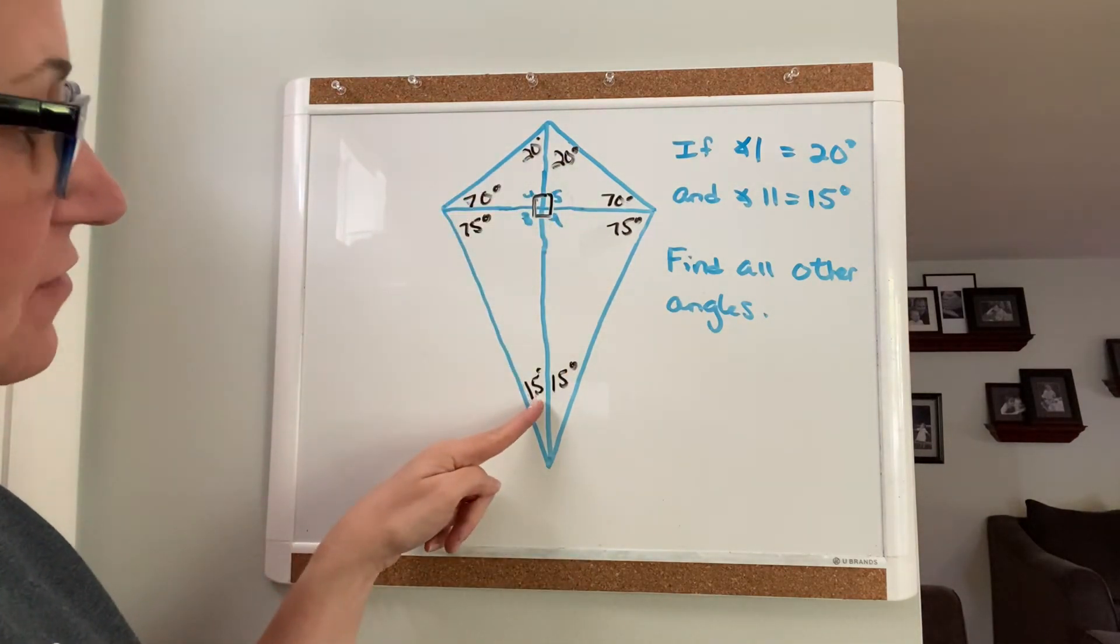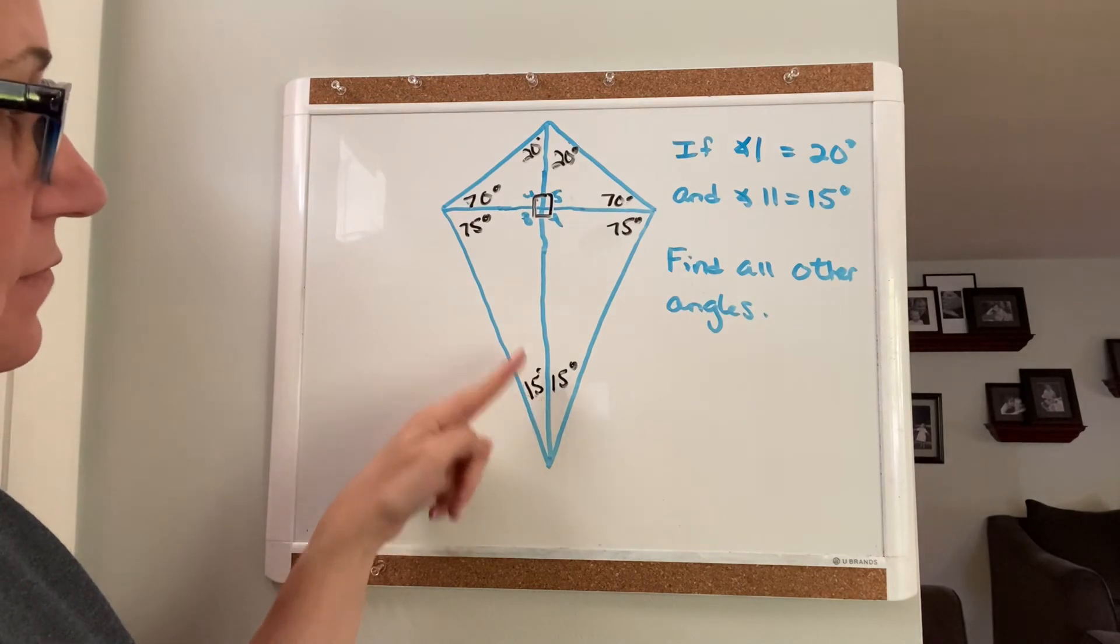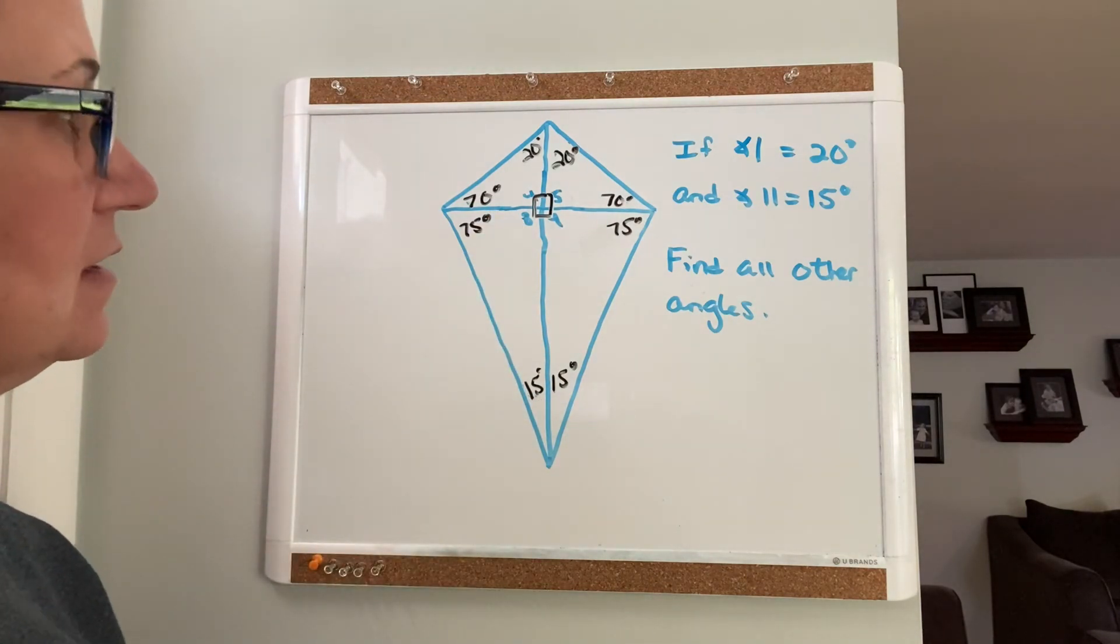So 75 and 15, that's 90, plus another 90 is 180.